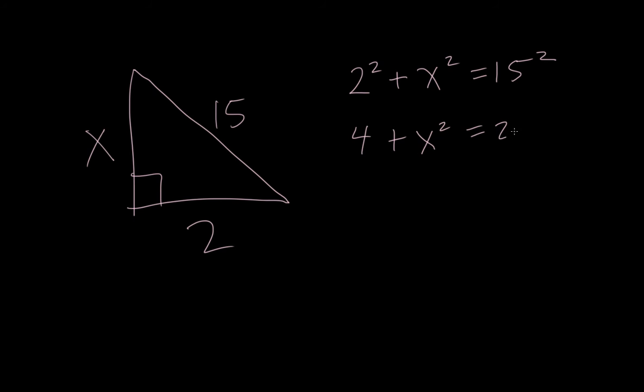So let's say 2, x and 15. So what we're going to do, we're going to say 2 squared plus x squared equals 15 squared. So that's 4 plus x squared equals 225. We'll have to do some algebra. So subtract 4. x squared equals 221.